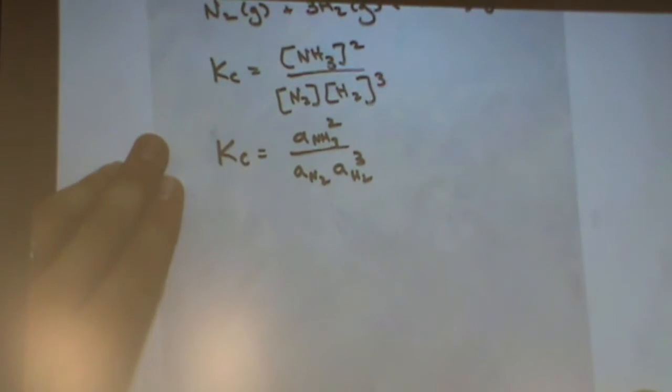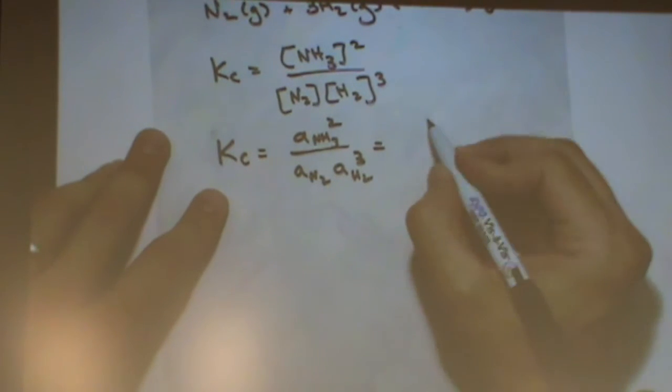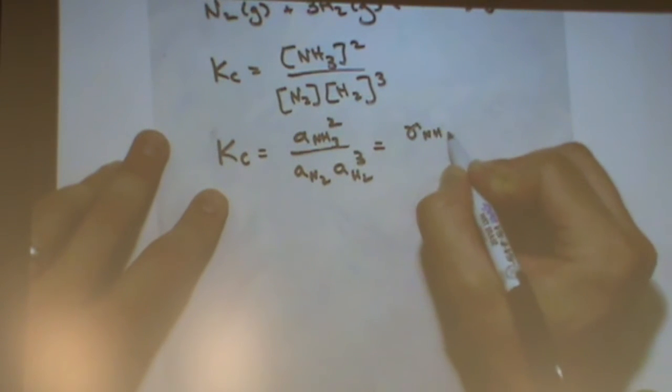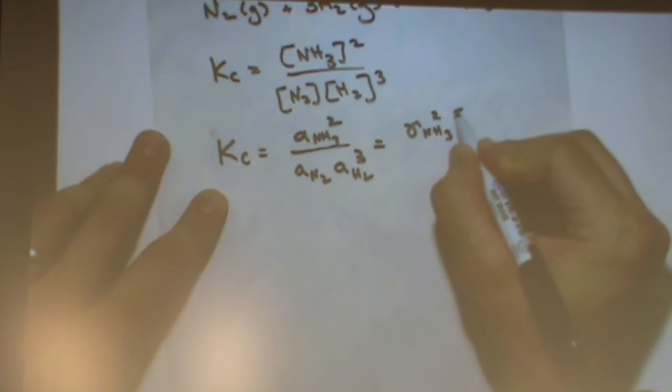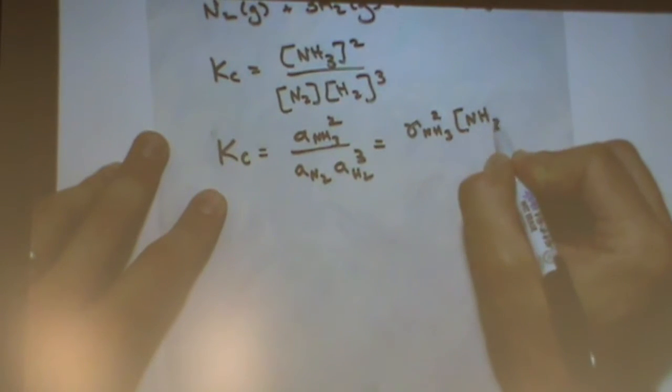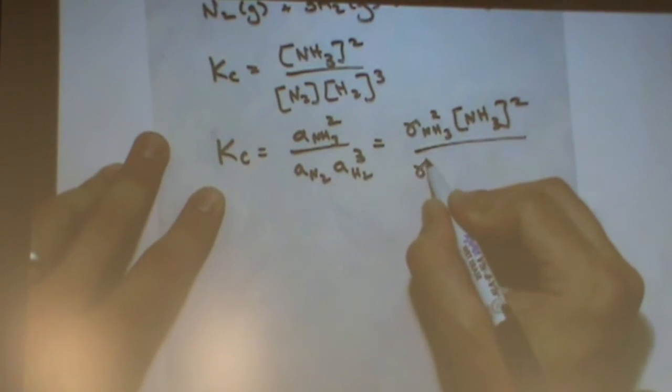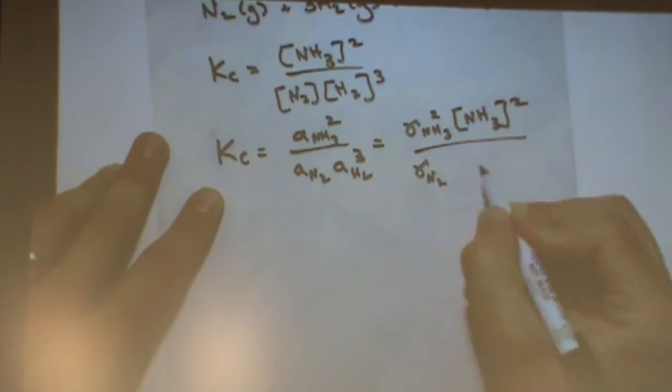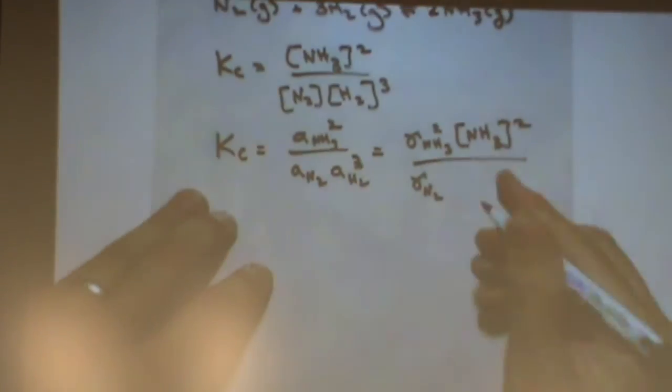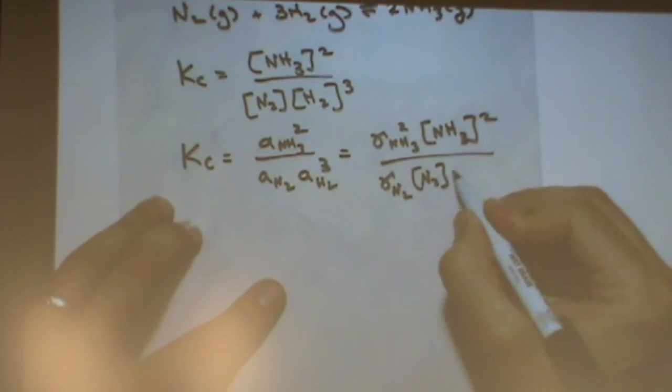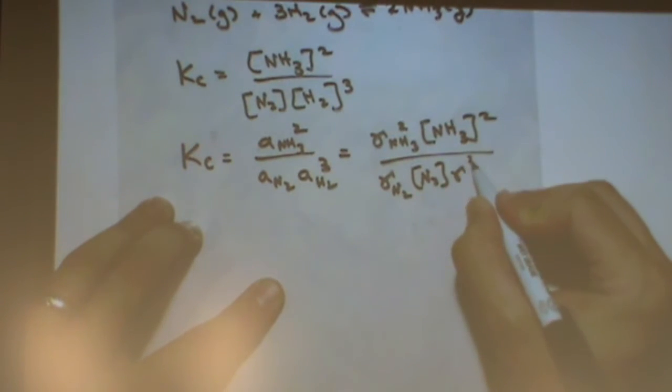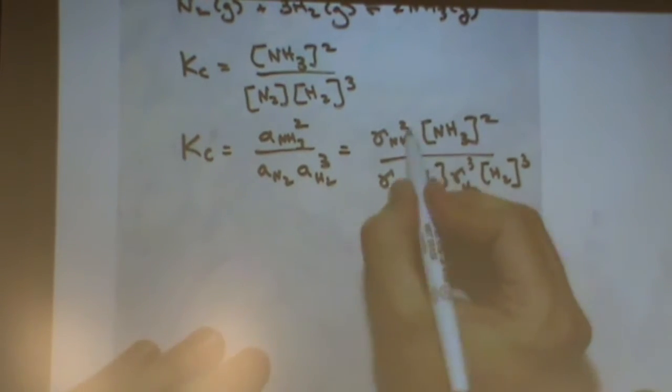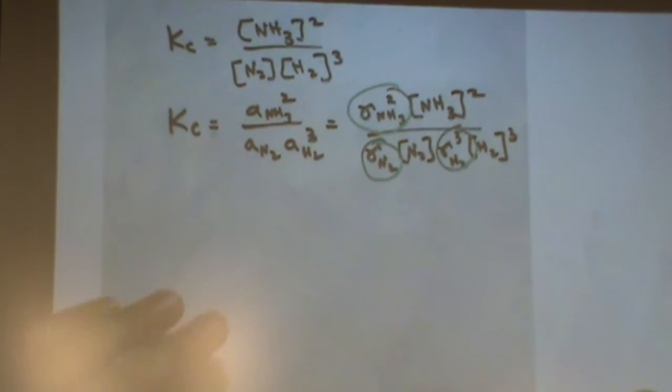The activity is just the activity coefficient. One way of defining it, the activity coefficient, in this case, times the concentration. So that would be gamma, the activity coefficient for ammonia, squared, times NH3 concentration squared, over gamma for N2 times N2 concentration times gamma cubed for H2 times the H2 concentration cubed. So you can see if I circle these, the only difference is what I'm circling right now, the gammas.